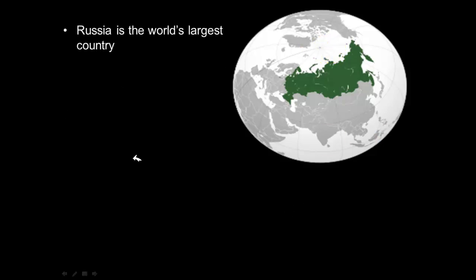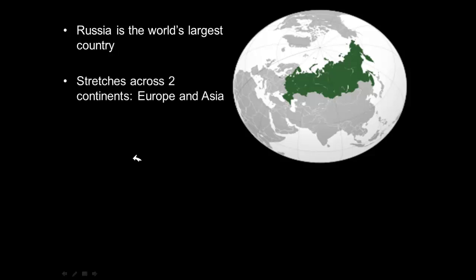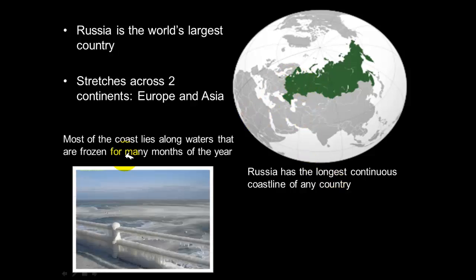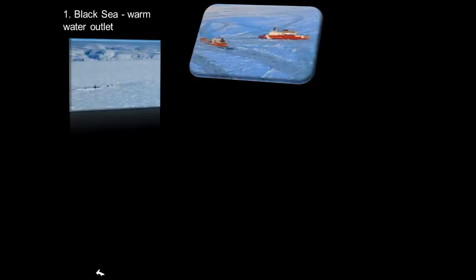In review: Russia is the world's largest country, stretches across two continents — Europe and Asia — and has the longest continuous coastline of any country. However, most of that coast lies along waters that are frozen for many months of the year, making it very hard for Russia to prosper and trade.